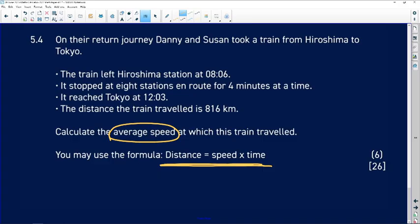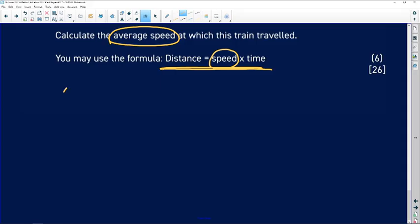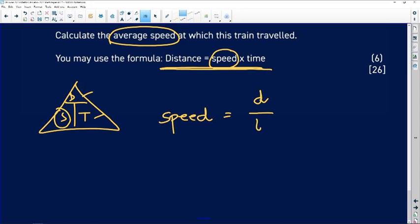The first thing that we need to do before we can do this calculation is to figure out how we would find speed. So I always use the triangle DST. If I'm looking for speed, it's going to be distance over time. So speed equals distance over time.